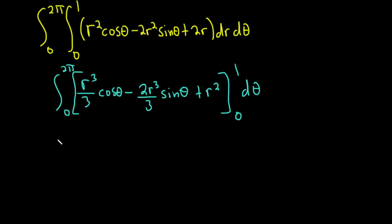And we're going from 0 to 1 d theta. So again, we just use the power rule here. And we're treating cosine theta and sine theta as constants. I plug in the 1. So this will be the integral from 0 to 2 pi. Plug in the 1 here. We're going to get 1 third cosine theta, minus 2 thirds sine theta, plus 1. And then minus, and then you plug in 0, but you have r's everywhere here, so it's all going to be 0.